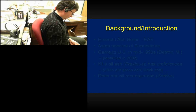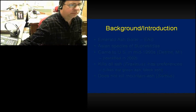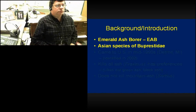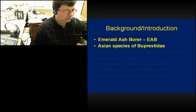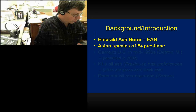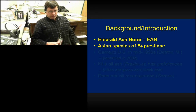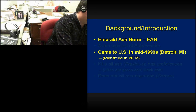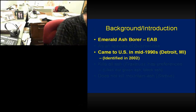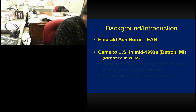Very briefly I'll give a background introduction. Most of us know about EAB — emerald ash borer. It is an Asian species of buprestids, especially the Agrilus, which are metallic wood-boring beetles. It came to the U.S. in the mid-1990s in the Detroit, Michigan area. Nobody figured out what it was until about 2002, and they knew right away at that point that it was going to be a big problem.